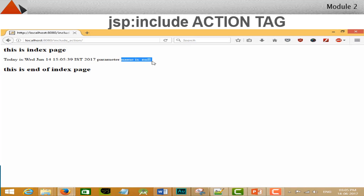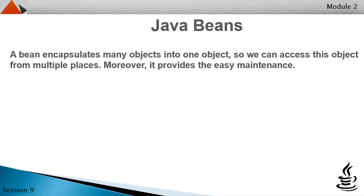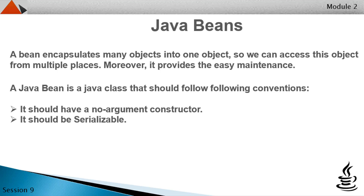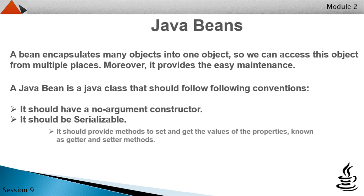Now let's discuss Java Beans. A bean encapsulates many objects into one object, so we can access this object from multiple places. Moreover, it provides easy maintenance. It is a reusable software component. A Java Bean is a Java class that should follow these conventions: it should have a no-argument constructor, it should be serializable, and it should provide getter and setter methods to set and get the values of its properties.